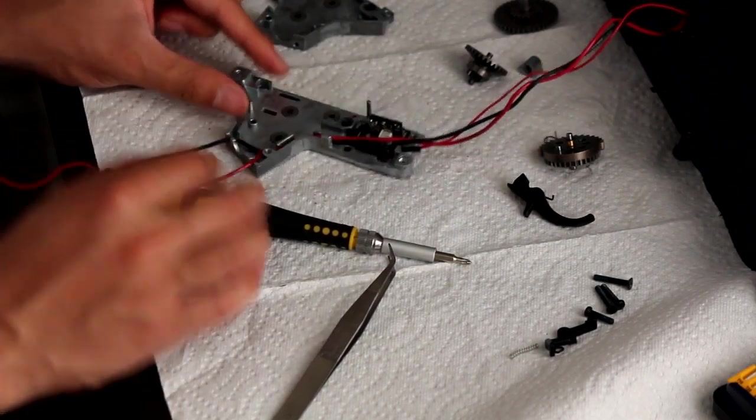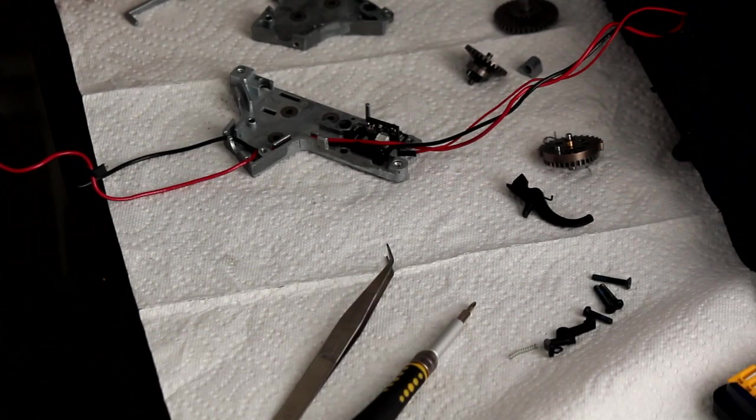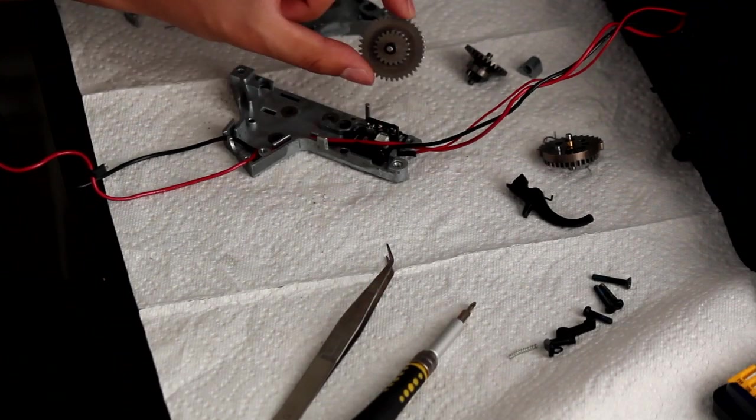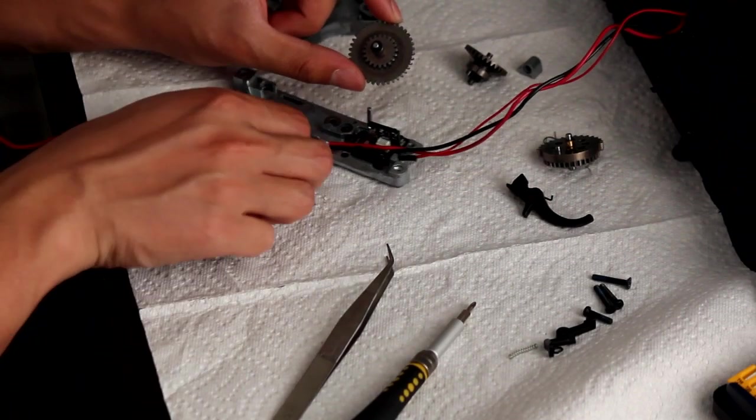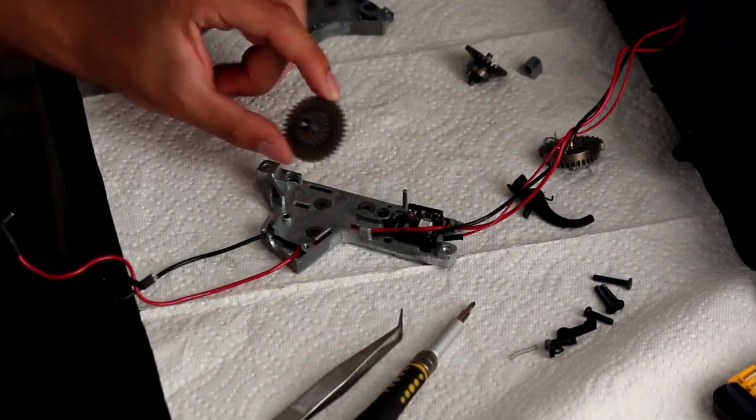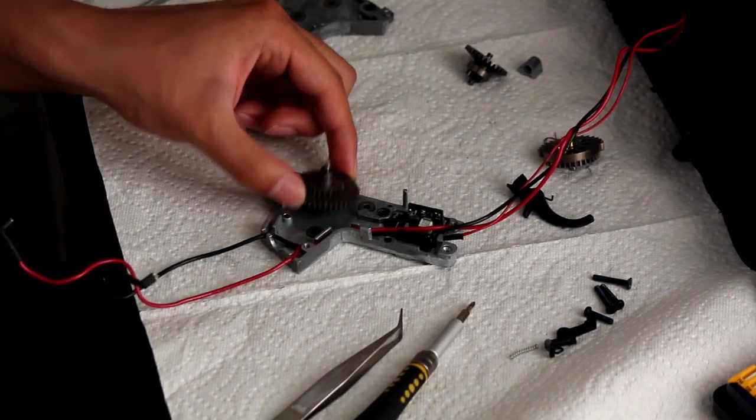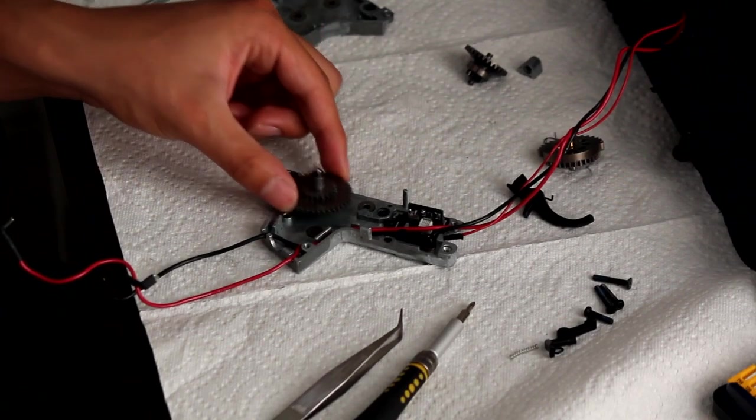And then next, we're going to go to the gears. Now, you're going to take the big round gear. I don't remember exactly what it's called. And then we're going to put it in the first, most left slot.